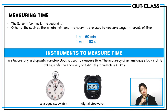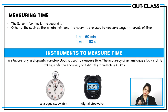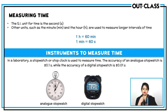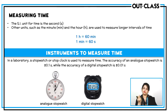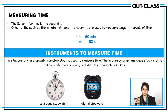For measurement of time, we use a stopwatch — either a digital stopwatch or an analog stopwatch. Both can be used to measure intervals of time. The SI unit of time is seconds, but we also have larger units like minutes. Normally we measure time in seconds.